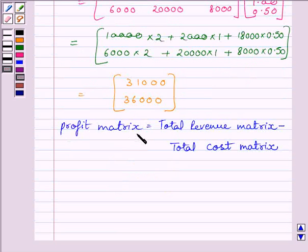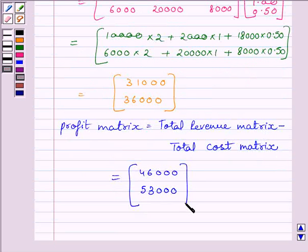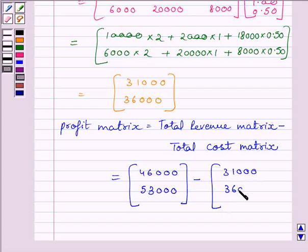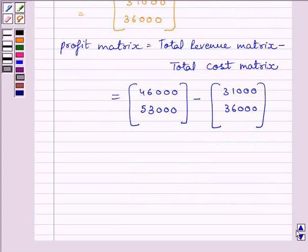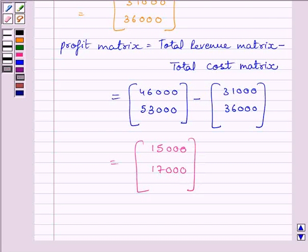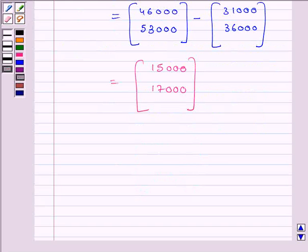Now we know the profit matrix equals total revenue matrix minus total cost matrix. We obtained total revenue matrix as 46,000 and 53,000, minus total cost matrix of 31,000 and 36,000. This gives us the matrix 15,000 and 17,000. So profit in market one is equal to Rs. 15,000 and profit in market two is equal to Rs. 17,000, since the rows represent the two markets.